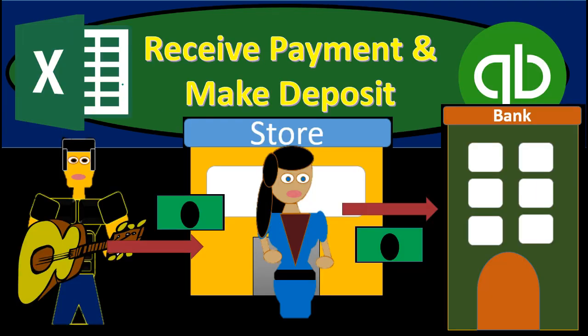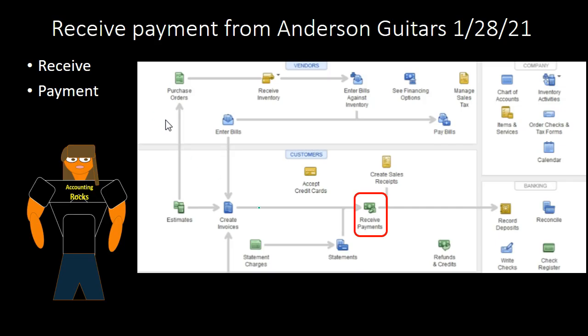We've seen both of these items before, meaning the receipt of payment and making a deposit. We're going to try to do them both at the same time so we can see them linked together, though we'll go a bit faster since we've seen both items before. Within QuickBooks, the first item is the receipt of payment. The assumption is that we've already issued an invoice for a guitar that was shipped out, and we are now receiving the payment in the mail.